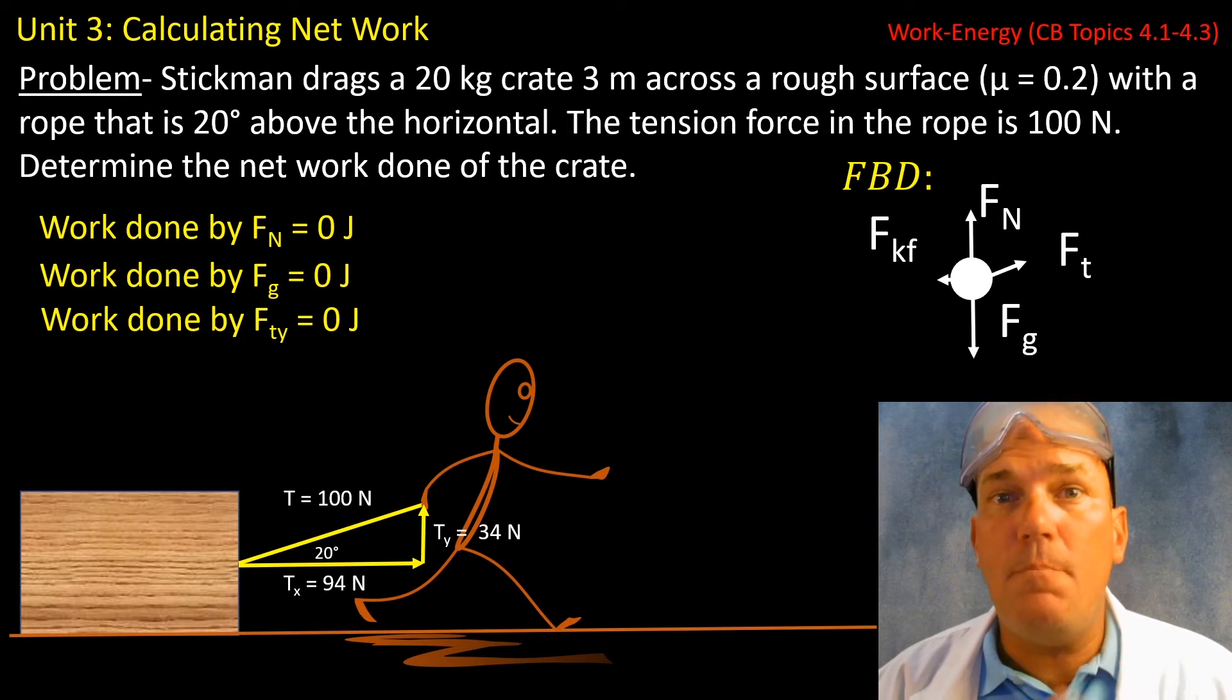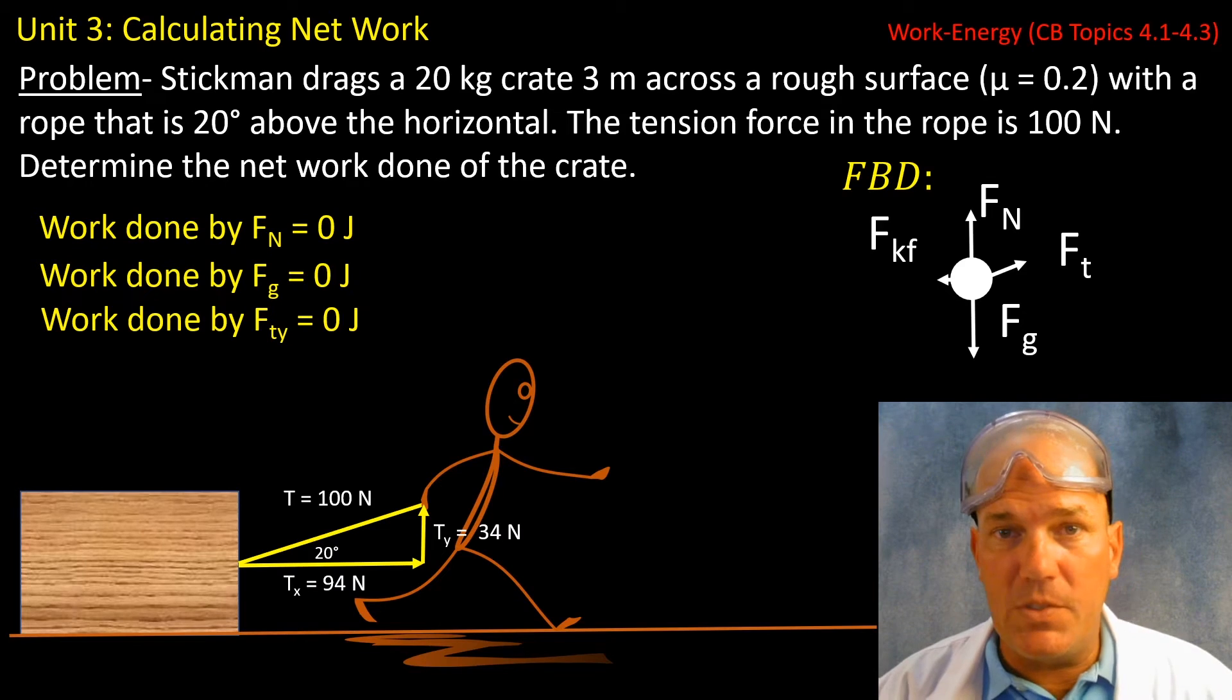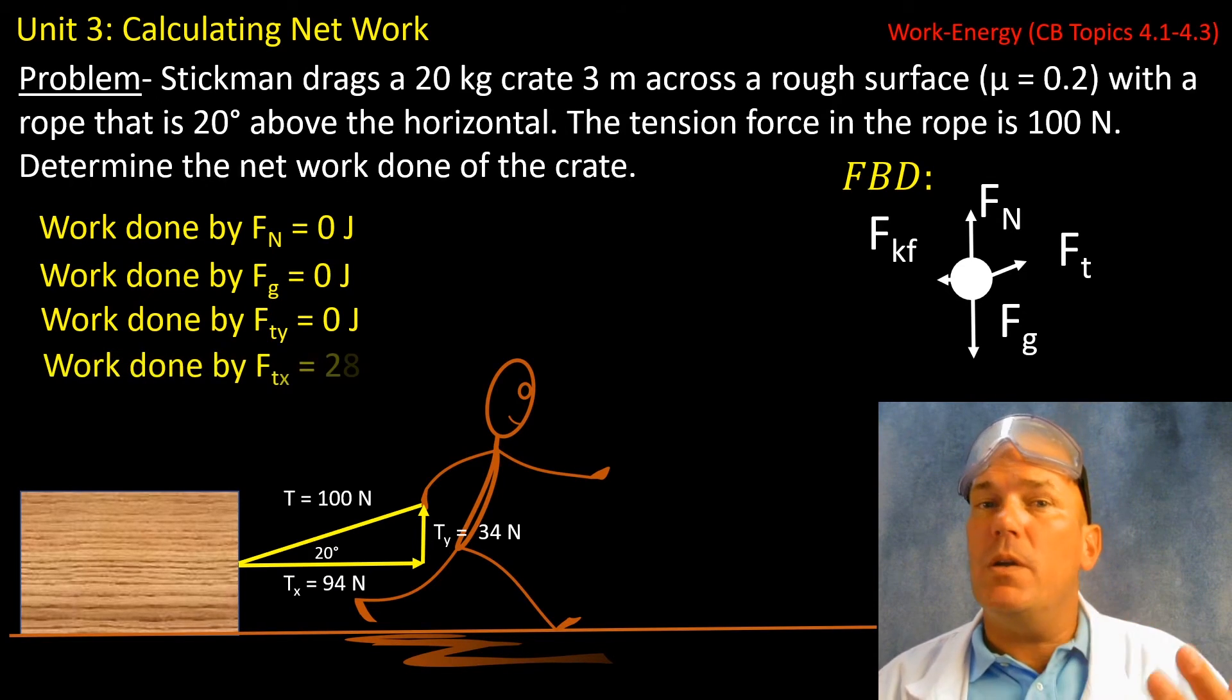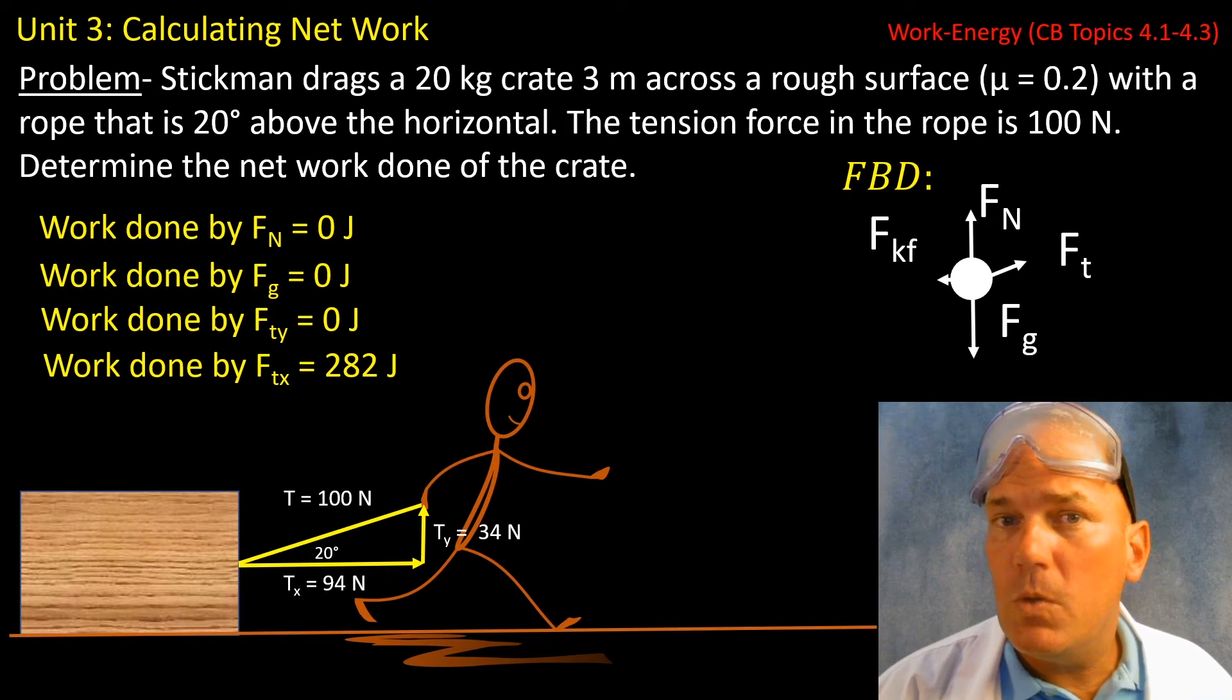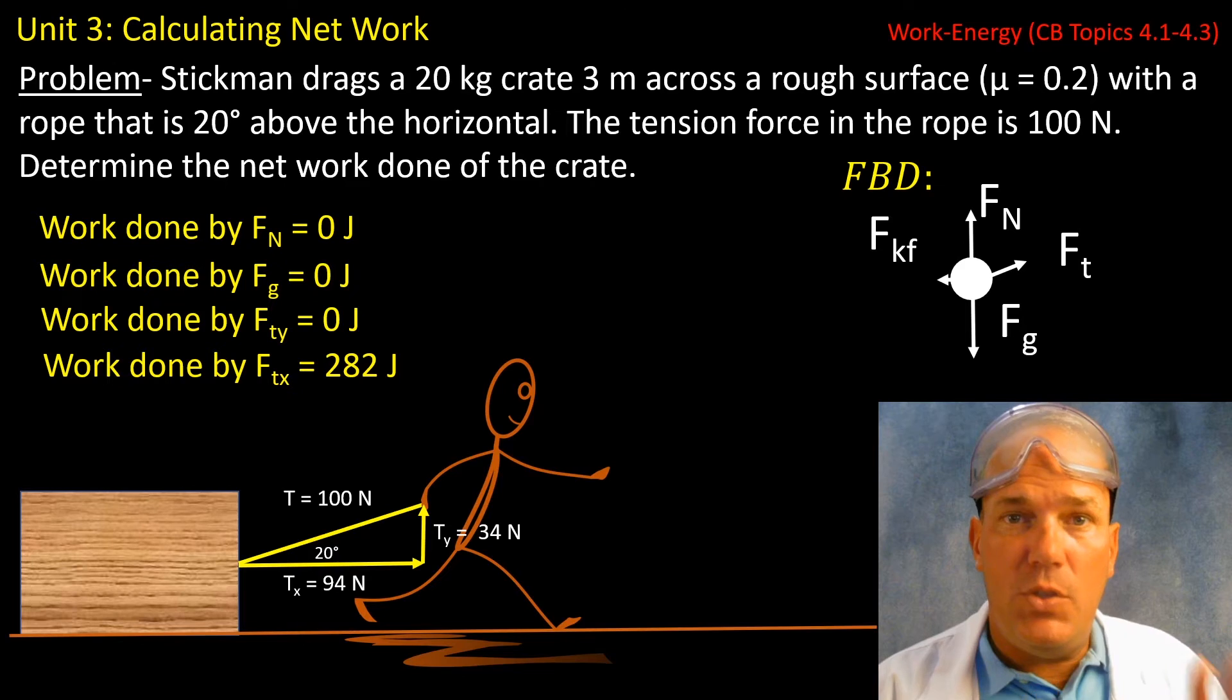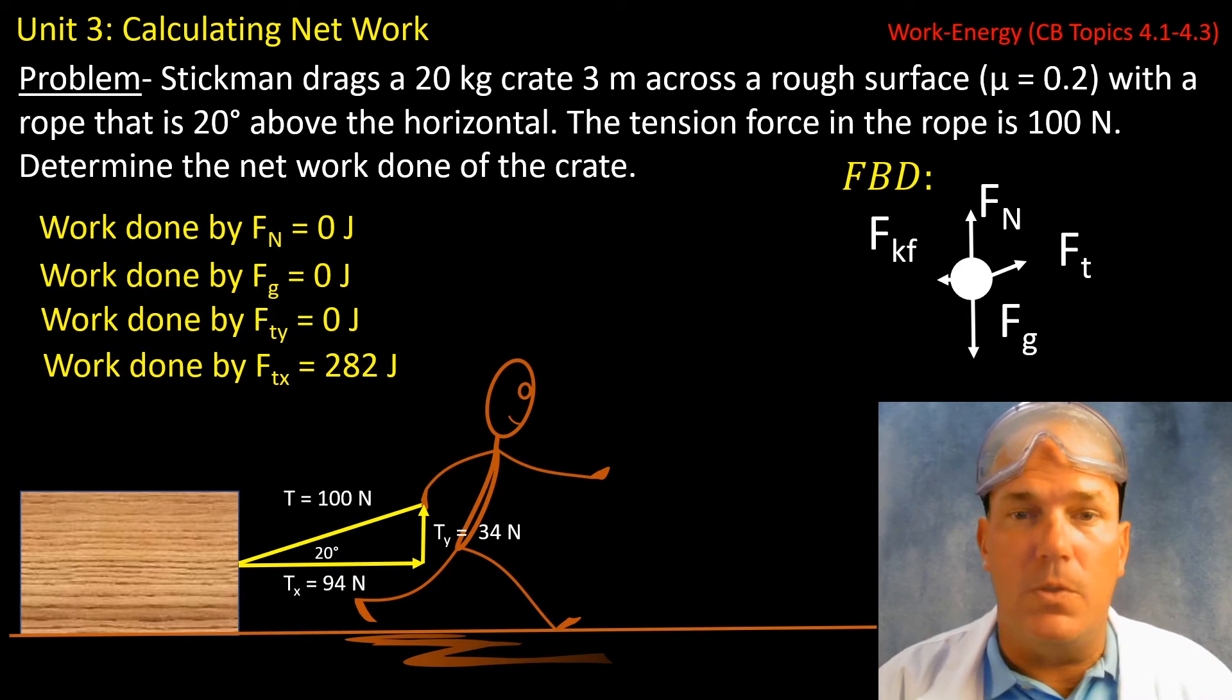The work done by the upward force of tension, again, zero joules. The work done by the rightward or horizontal component of our tension force did 282 joules of work.